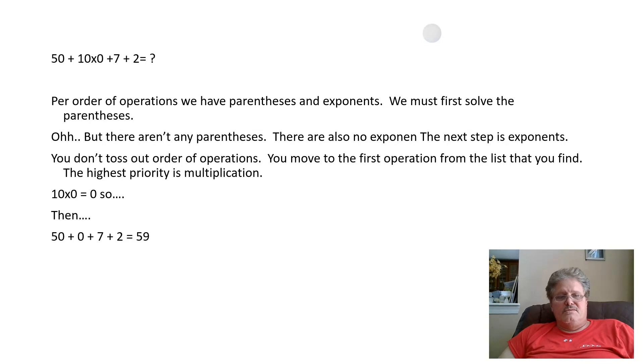Multiplication already has precedence over addition and subtraction. It doesn't need any help. The first thing you've got here is multiplication, so 10 times 0 is 0.